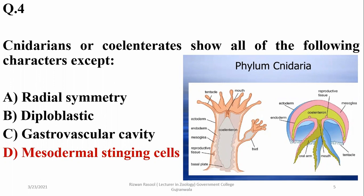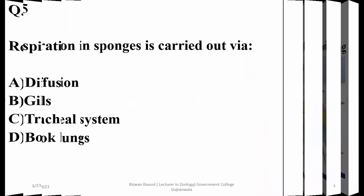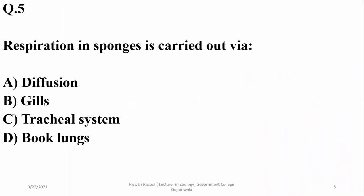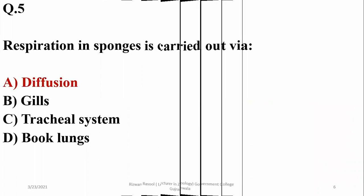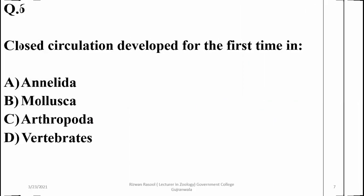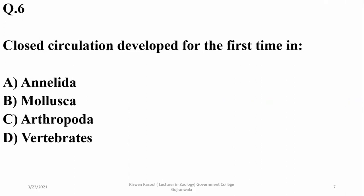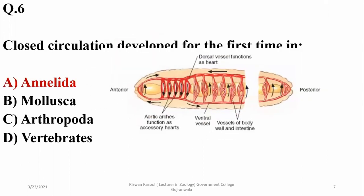Question five: respiration in sponges is carried out via diffusion — there is no specific system. Closed circulation developed for the first time in annelida according to evolutionary history.